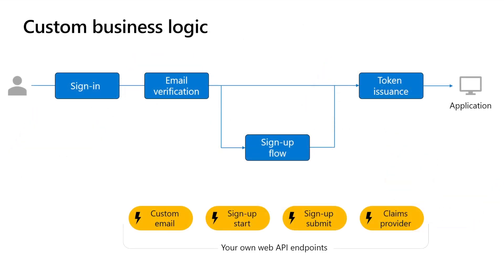Adding custom business logic can enhance a customer's login experience by connecting to your own services and data stores. This is easily done with the sign-up and sign-in user flow using Microsoft Entra External ID custom authentication extensions. It allows you to add business logic at specific points within the authentication flow — for example, sending your own custom email before the sign-up starts, when the sign-up is about to be completed, or before a security token is issued. When these events are activated, Microsoft Entra External ID makes an HTTP call to a REST API endpoint where you define your business logic.